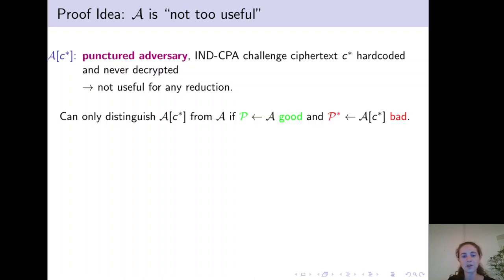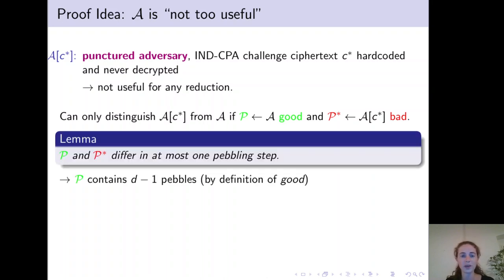However, a reduction can only distinguish A of C star from A if the pebbling configuration that A extracts is good, whereas in the same execution of the game using the same randomness, the pebbling configuration that A of C star extracts is bad. We then prove that P and P star differ in at most one valid pebbling move according to our pebbling game. And this then implies that the reduction can only distinguish A of C star from A if P contains D minus 1 pebbles and is good.